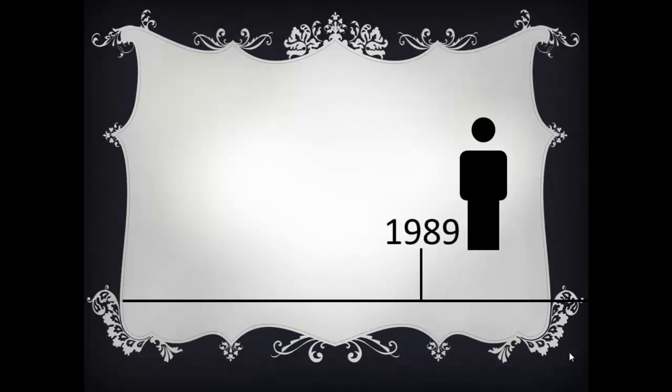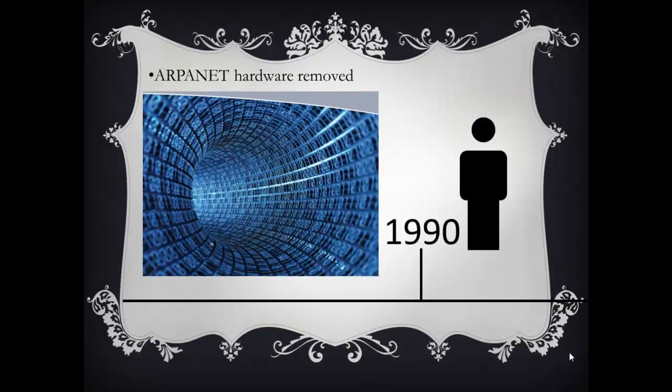In 1989, Tim Berners-Lee coined the term WWW for World Wide Web. In 1990, Merit, IBM, and MCI formed T3 lines which were capable of carrying 45 megabits per second of data. On February 28, 1990, ARPANET hardware was removed.